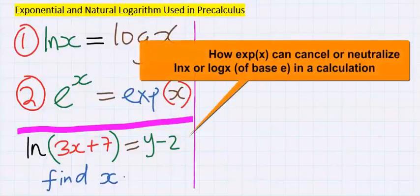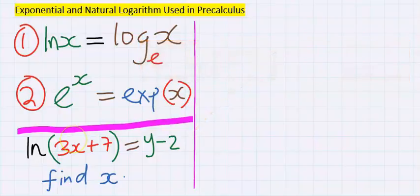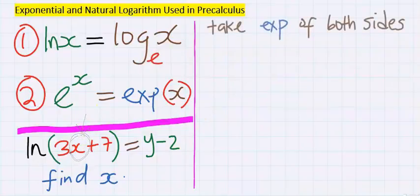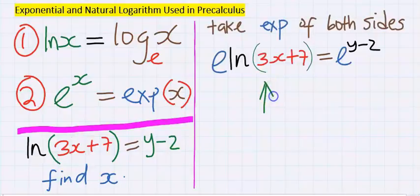In this example, let us see how exponential can neutralize natural log to find x. x is in a difficult position, hence we take exponential on both sides. We can write it like this.